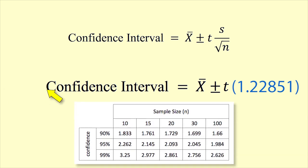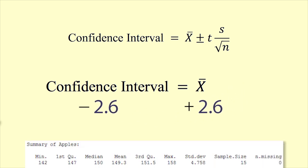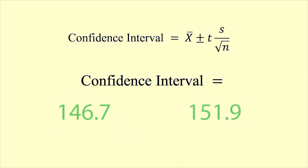The t-value for a sample of 15 and a confidence level of 95% is 2.145. The margin of error is 2.63515, which we round to 2.6. We add and subtract this from the sample mean of 149.3 to get a confidence interval of 146.7-151.9.